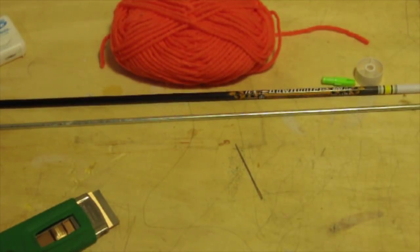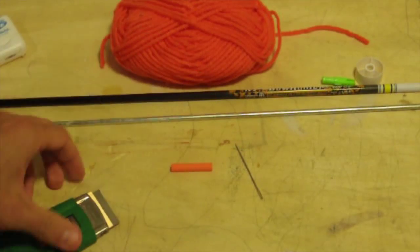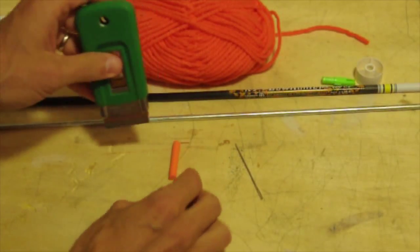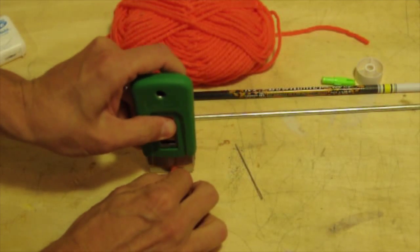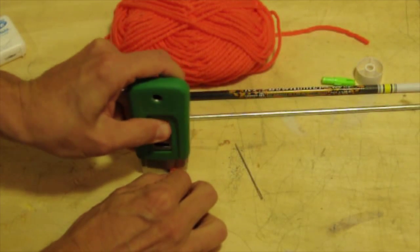But you could also use, carefully, a straightened coat hanger if you want. So the first step is to cut a piece of the foam cylinder.